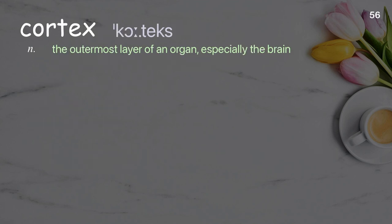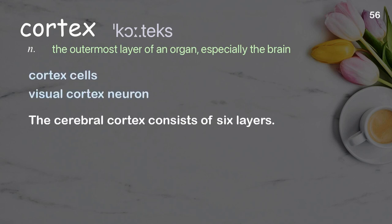Cortex: the outermost layer of an organ, especially the brain. Examples: cortex cells, visual cortex neuron. The cerebral cortex consists of six layers.